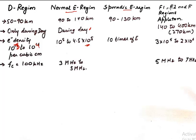Finally, we have the F1 and F2 layers — the topmost layers. During the night they merge into just one F layer. This layer is also known as the Appleton region and extends from 140 to 400 kilometers, with an average height of 270 kilometers. The electron density is higher than that of the E region — 3×10⁵ to 2×10⁶ electrons per cubic meter — and the cutoff frequency is 5 to 7 megahertz.